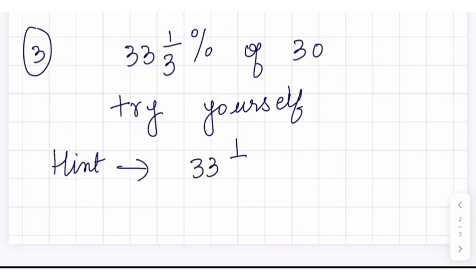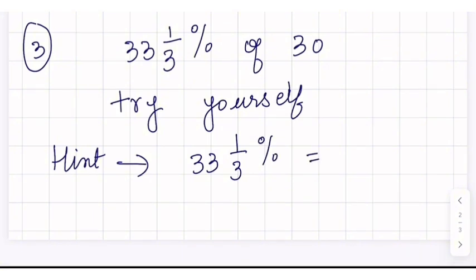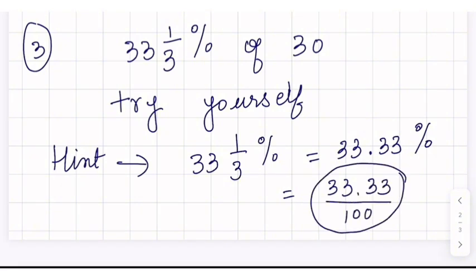So 33 one-third percent. So we're going to write this as 33.3%. Now that one-third is actually 0.333 forever, but we can just write it as 0.33.